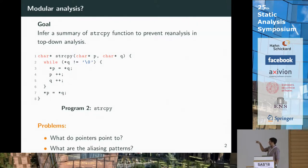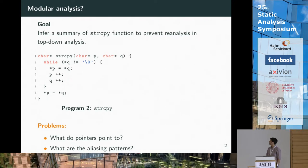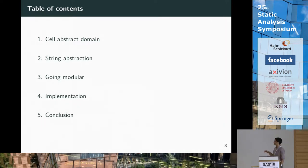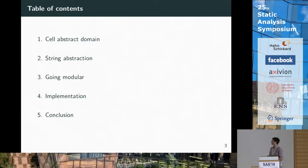Performing a modular analysis on this function yields more difficulties because we have to know where the pointers point to and what the possible aliasing schemes are. To handle this, we work on a low-level subset of C, and in order to not start the abstraction from scratch, we build our analysis on the already existing CELL abstract domain. On top of this, we put higher-level abstractions describing string length and allocated size, and then we present how to transform this into a modular analysis able to infer function summaries.